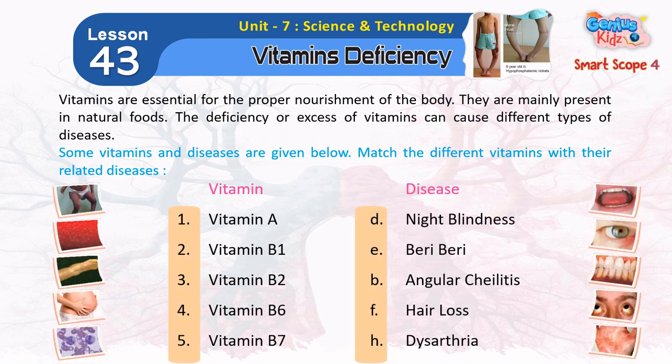Vitamins are essential for the proper nourishment of the body. They are mainly present in natural foods. The deficiency or excess of vitamins can cause different types of diseases. Some vitamins and diseases are given below. Match the different vitamins with their related diseases.